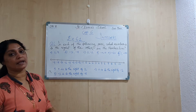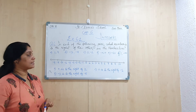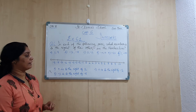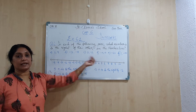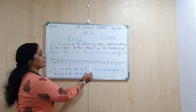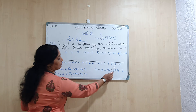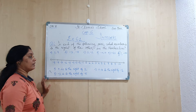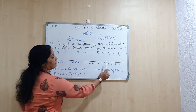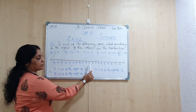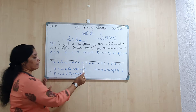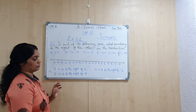Let's see part A of question number 6. The pair is 2 and 9. This is our number line — here is 2, and here is 9. So the answer is: 9 is to the right of 2.